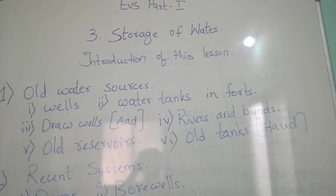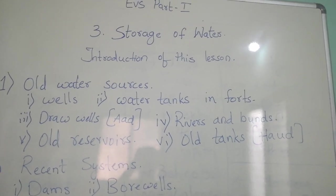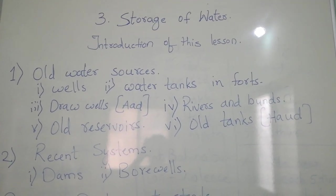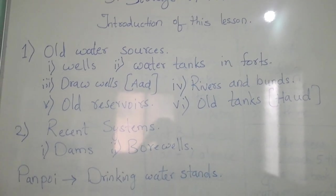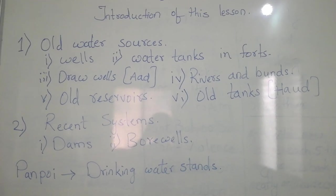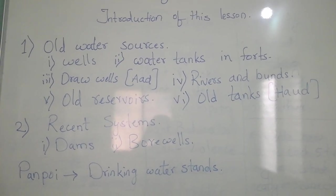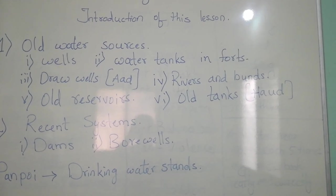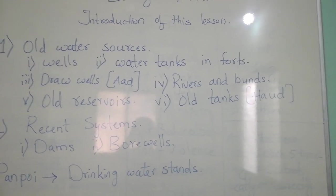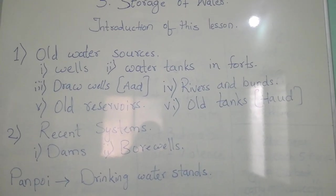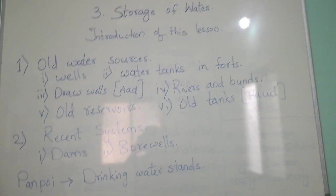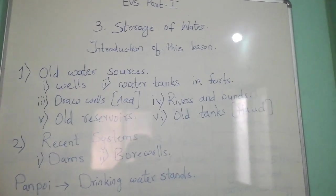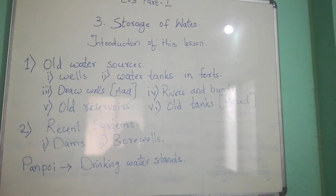Old reservoirs means reservoirs were built in areas of low rainfall or without a major river. Most of the reservoirs were built using stone or mortar. Old tanks means earlier, tanks were used to store water. Some larger cities still have these older tanks. In our houses also, when construction starts, we first build an underground tank to store water for construction or for day-to-day use.